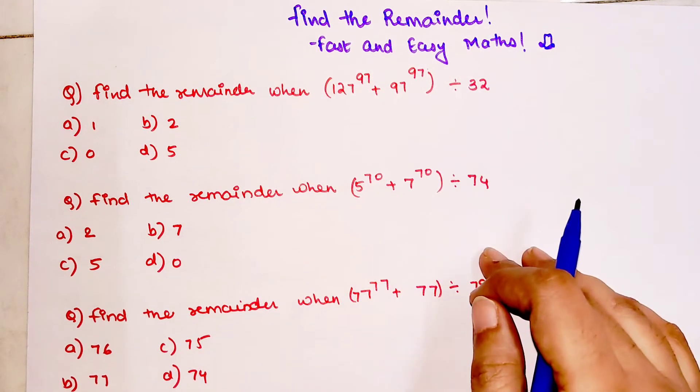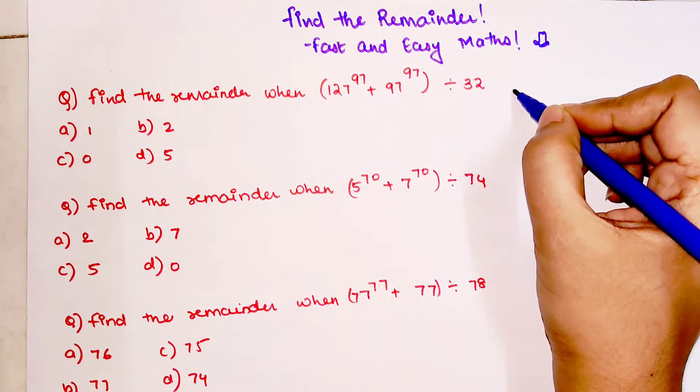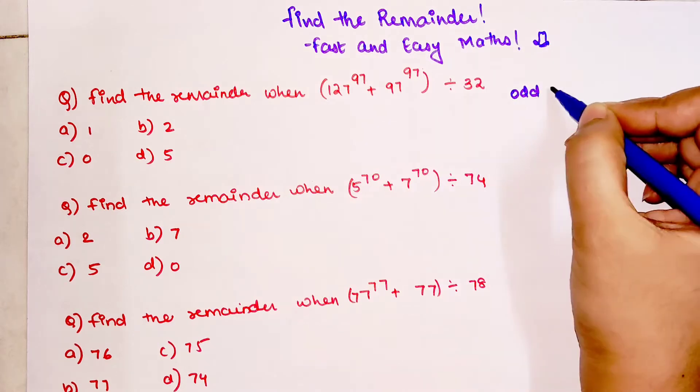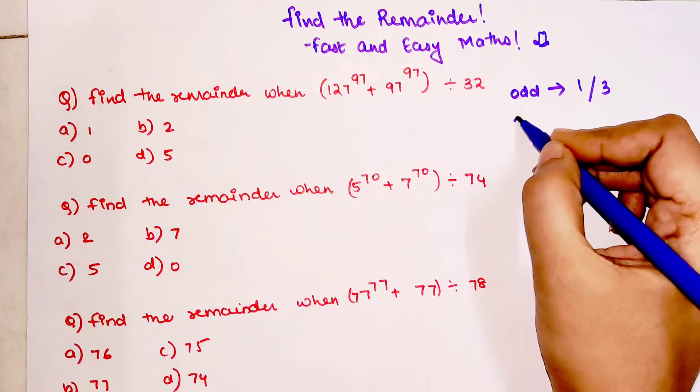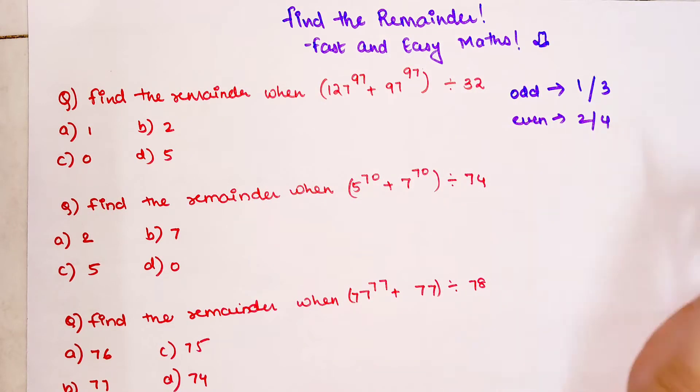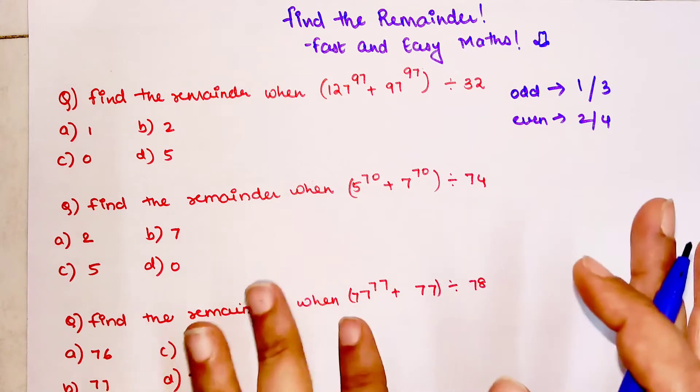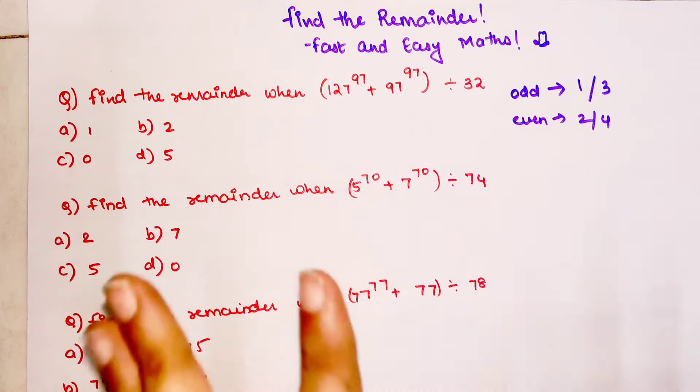All you have to take care is if the power is odd, make it raise to 1 or 3. If it is even, then you make it raise to 2 or 4. That's it. Trust me, after this you don't have to do anything.